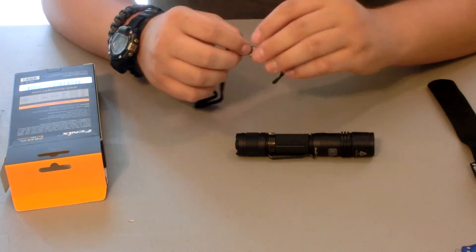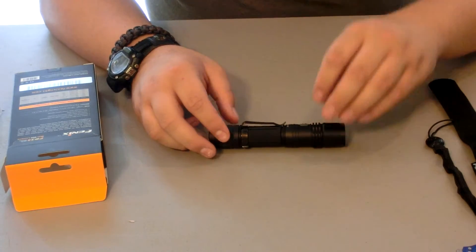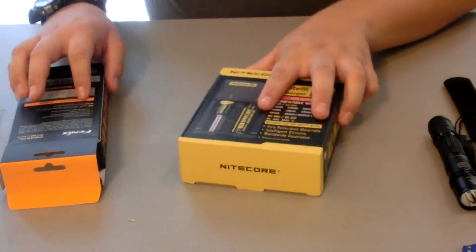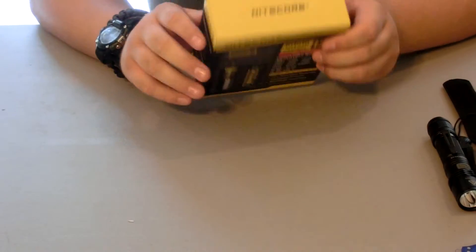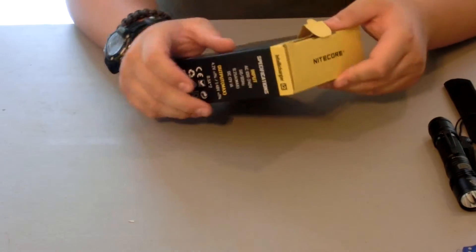The lanyard just goes right through here and you just tie it in, and I'll do that later on because I don't think y'all want to watch me do that. So now let's jump into the little charger that it came with. This is the Nitecore Intellicharger i2.